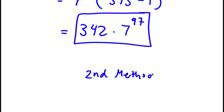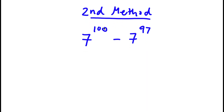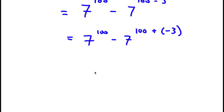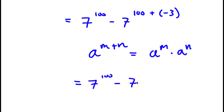Now for the second method of solving this problem, I start with 7 to the power of 100 minus 7 to the power of 97. Before, we replaced 100 with 97 plus 3. But now we're going to replace 97 with 100 minus 3. So I have 7 to the power of 100 minus 7 to the power of 100 minus 3. I'm going to rewrite 100 minus 3 as 100 plus negative 3, and applying the rule a to the power of m plus n equals a to the power of m times a to the power of n, that gives 7 to the power of 100 times 7 to the power of negative 3.